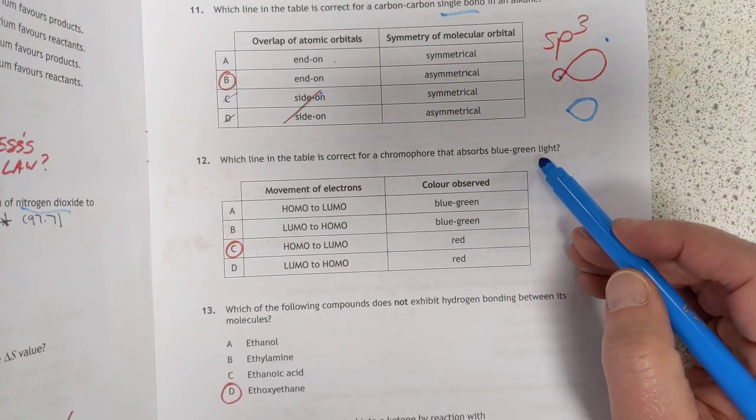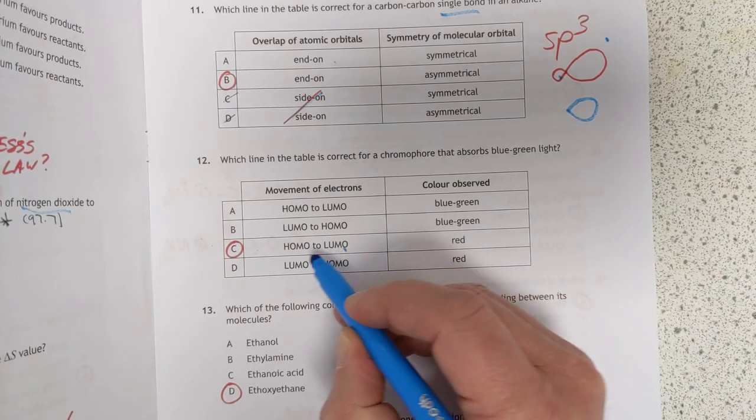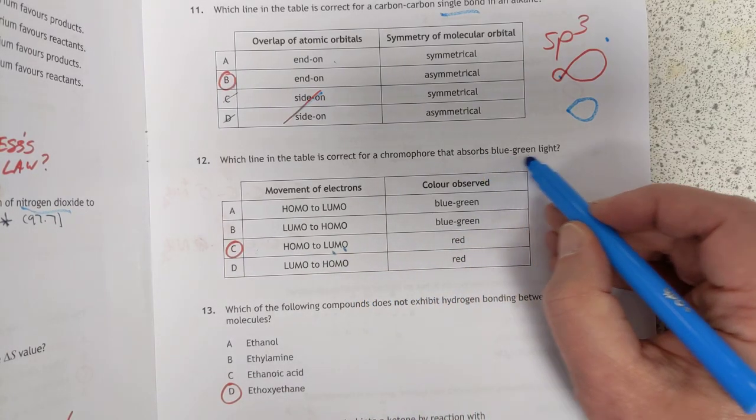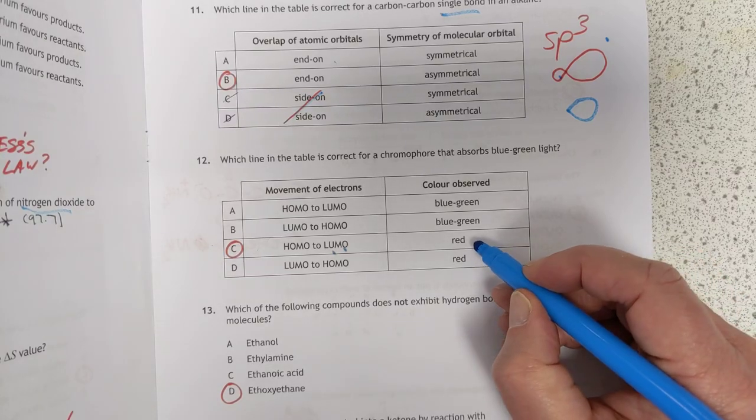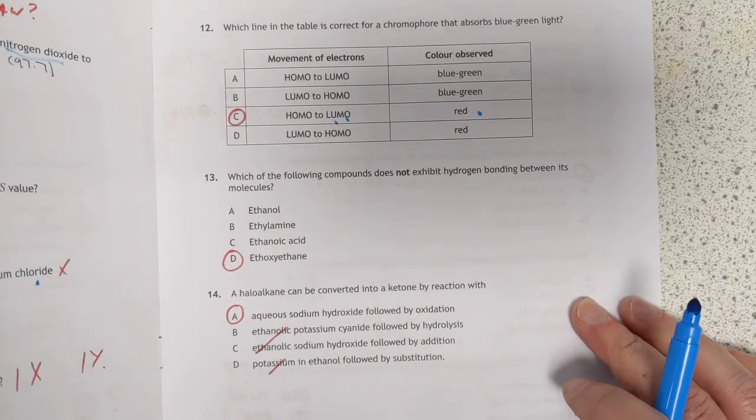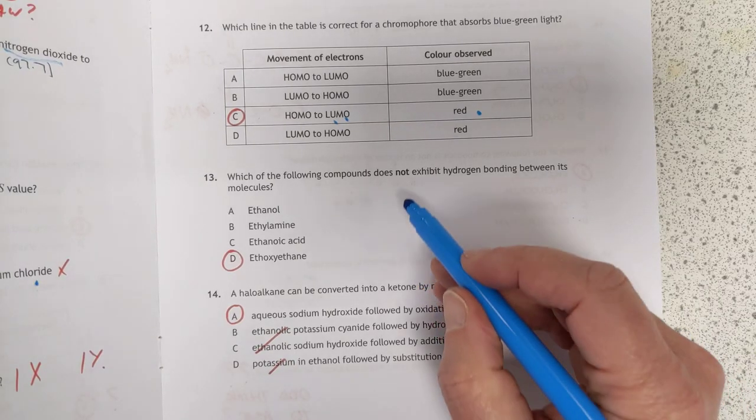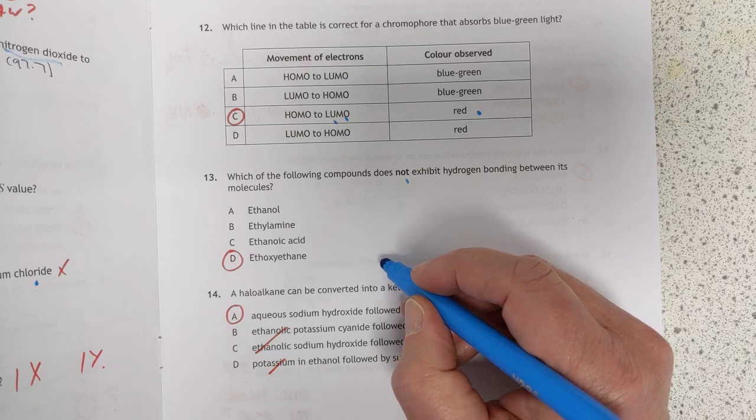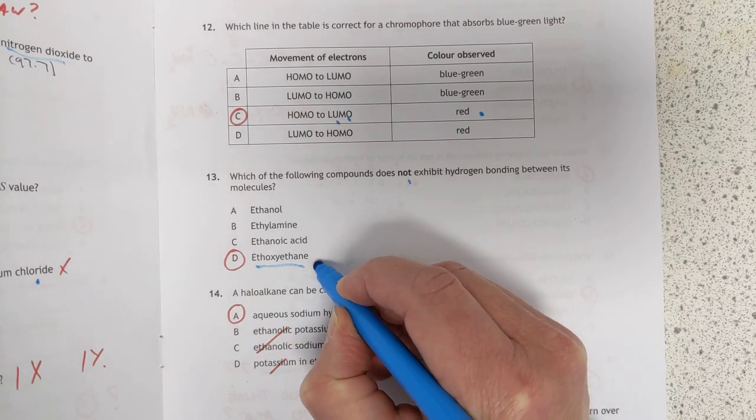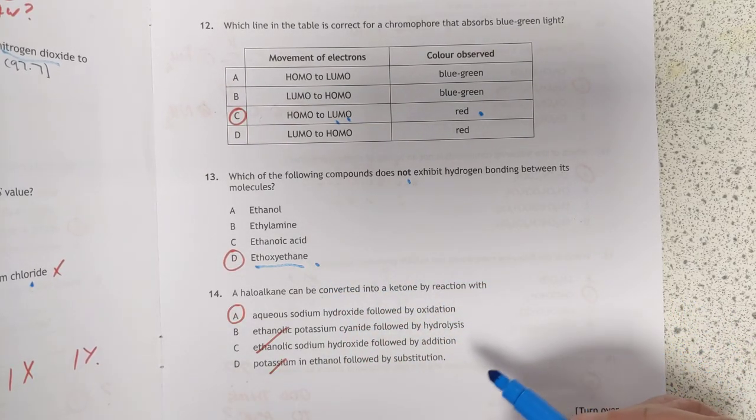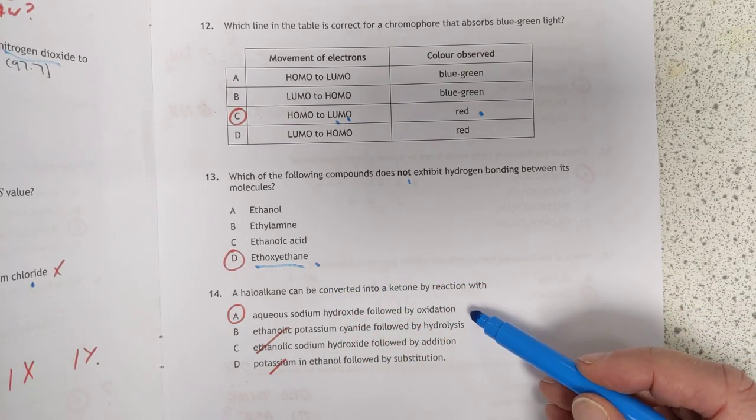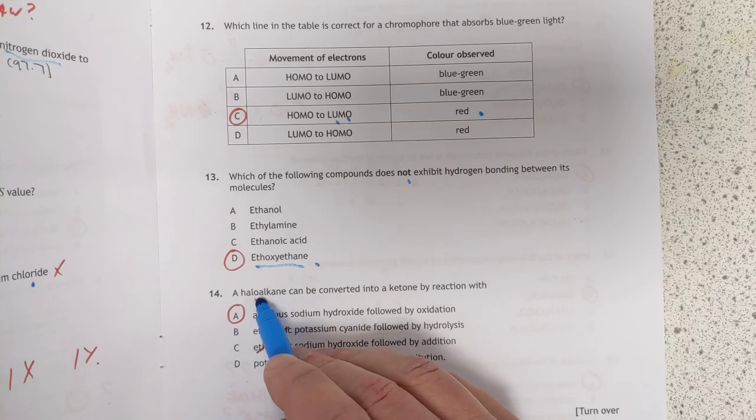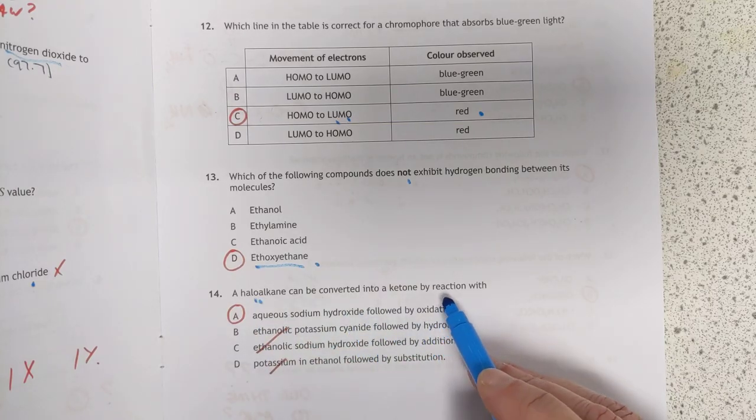A chromophore that absorbs blue-green light. Well, the transition is always HOMO to LUMO. Highest occupied molecular orbital to the lowest unoccupied one. And if you're absorbing blue-green light, take a quick look at the databook, find the complementary color, and it's that. Number 13 of 14. No hydrogen bonding. Well, you've got to have oxygen or nitrogen, but not attached to hydrogen. And the only one that fits that bill are the ethers. They have not got hydrogen bonding. Number 14. Halo-alkane. Converted into ketone. Aqueous sodium hydroxide will turn the halo-alkane into an alcohol, and then oxidation will turn into a ketone, so it's A.